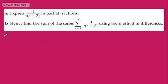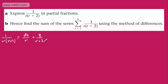So let's do some partial fractions. What we'll say is 1 over r(r+2) is identical to A over r plus B over r+2. Multiplying through, we're going to have 1 equals A(r+2) plus B multiplied by r.